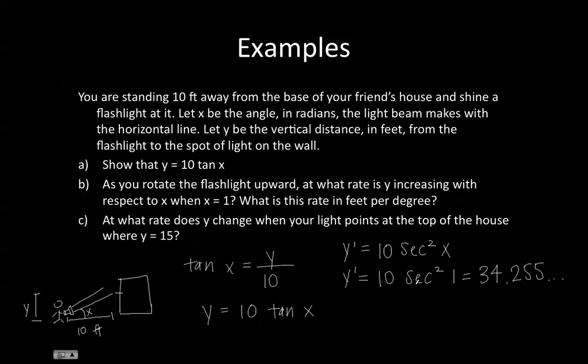Remember how when we found the derivative of sine X, we had to assume that X was in radians. Therefore, our X here is in radians, and our answer would be 34.255 feet per radian.